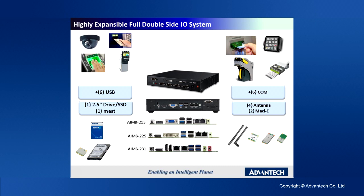With excellent expansion capability, on top of the motherboard coastline there are 6 COM ports and USB expansion — for example, camera solutions, keypads, card readers, coin collectors, and printer connections. So you can have, for instance, a kiosk solution based on this enclosure. You also have the option to add 4 antennas for up to 2 Mini-PCI Express cards, which can be Wi-Fi, 3G, or 4G. So it's quite flexible in that sense.